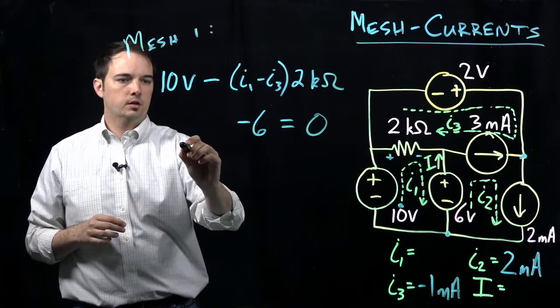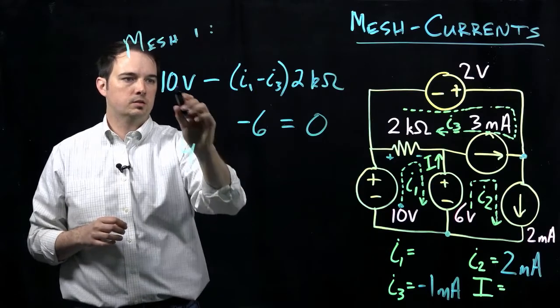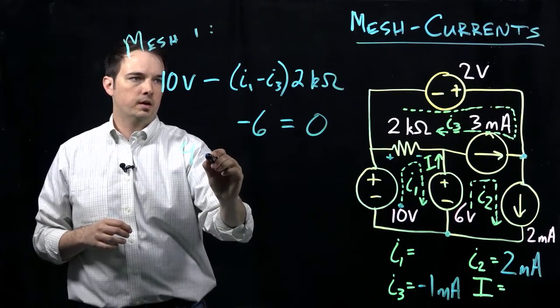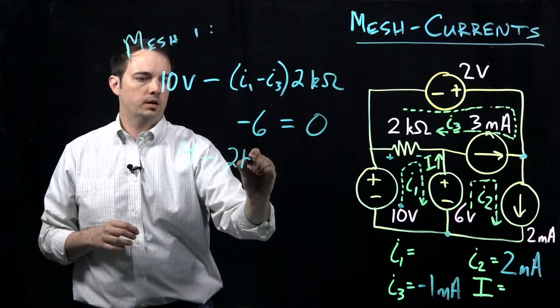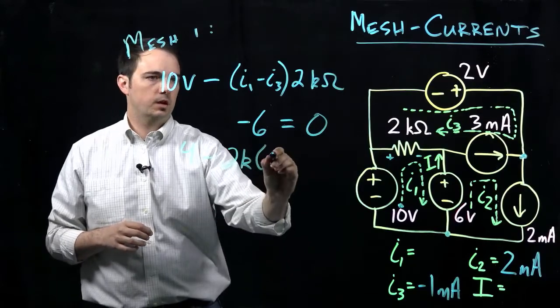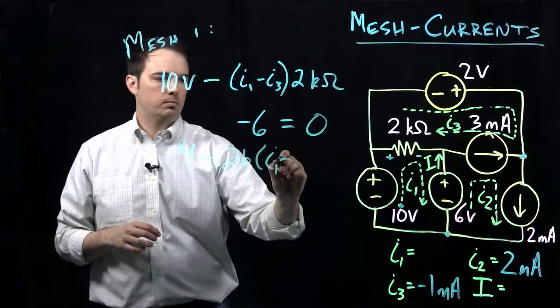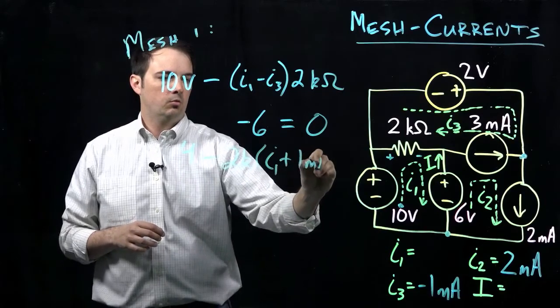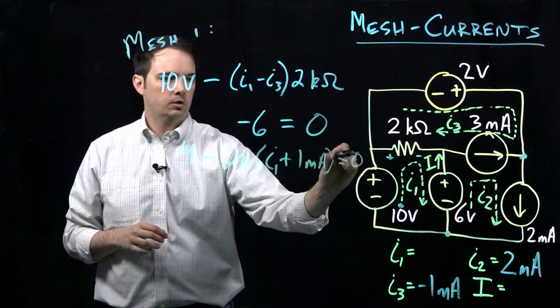So some simple math here: 10 minus 6 would be 4, and then minus 2k times I1 minus I3, which is negative 1 milliamp, so it's going to be plus 1 milliamp, will be equal to zero.